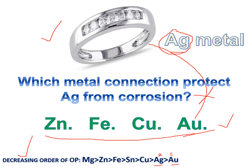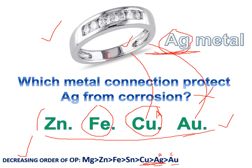The next option is copper (Cu). When connecting copper with silver: copper has a higher oxidation potential than silver, so copper acts as the anode and the Ag metal acts as the cathode. This connection could save the silver metal from corrosion because you connected a more active metal than silver. Similarly, zinc and iron also have higher oxidation potential than silver, so those connections also protect the base metal.